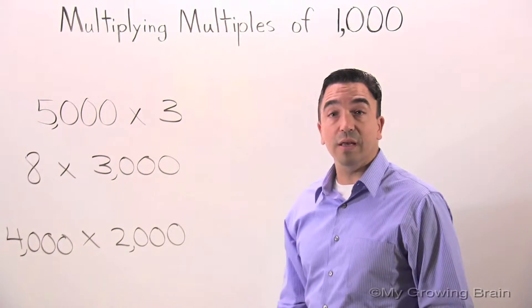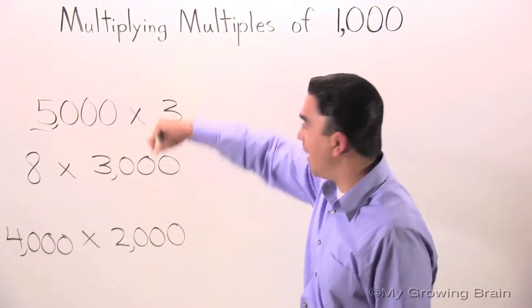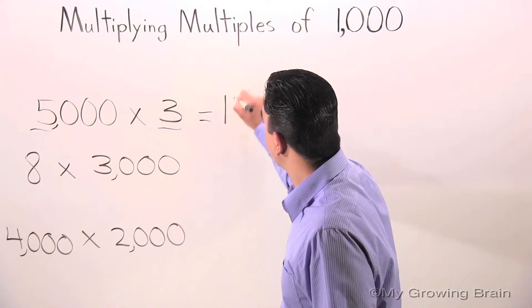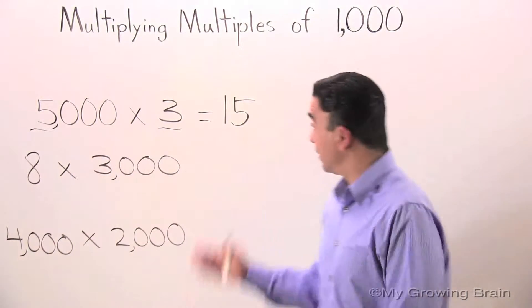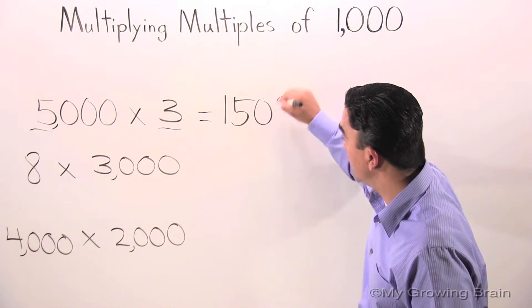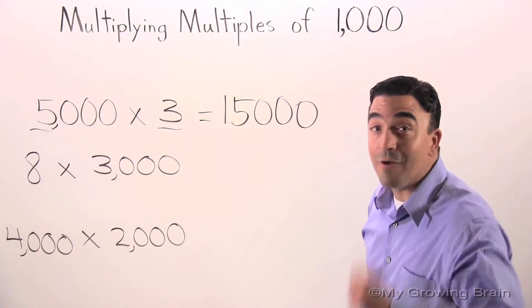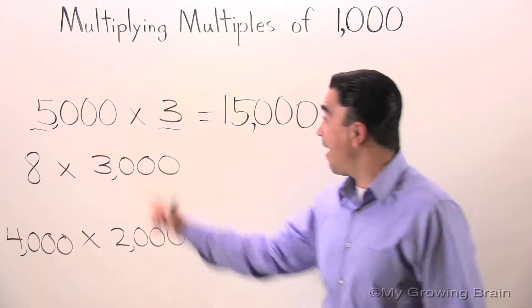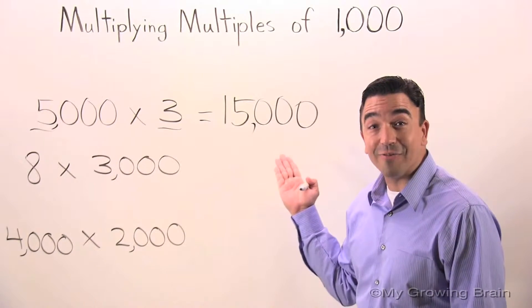Let's start with the first one. Five thousand times three. The first thing we do is we multiply five times three, which is equal to fifteen. Now, we add the three zeros to the fifteen. One, two, and three. Don't forget the comma. Five thousand times three equals fifteen thousand.